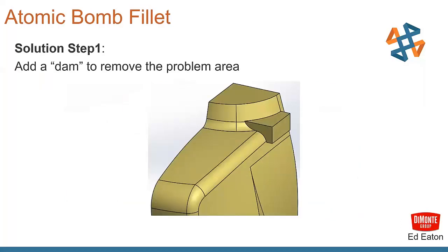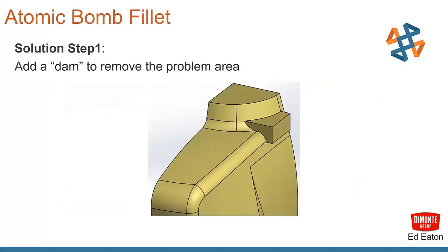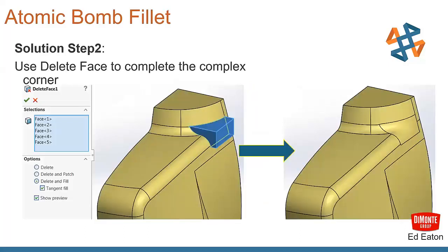What we do is we add a dam to remove the problem area. The problem is where those two radiuses meet right now, you can see it wouldn't come together cleanly. So each one works individually, together they don't work that well. So what we do, we add a dam to remove that problem area, then add in each of the fillets, the inside and outside radius is there. The next thing we do, we go back to that delete face command to complete that complex corner.